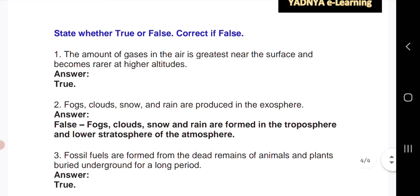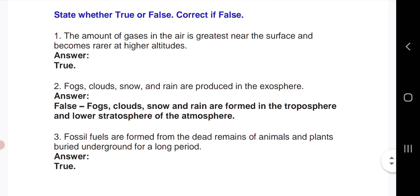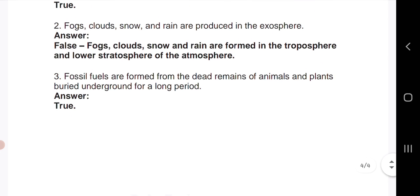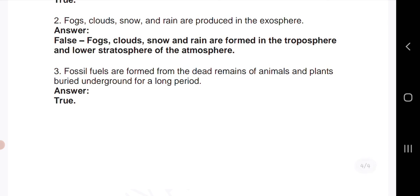Next question: true or false. If it's false then correct it. First one: the amount of gases in the air is greatest near the surface and becomes rare at higher altitude. Answer: true. Fogs, clouds, snow and rain are produced in the exosphere. Answer: false. Fogs, clouds, snow and rain are formed in the troposphere and lower stratosphere of the atmosphere. Fossil fuels are formed from the dead remains of animals and plants buried underground for a long period. Answer: true.